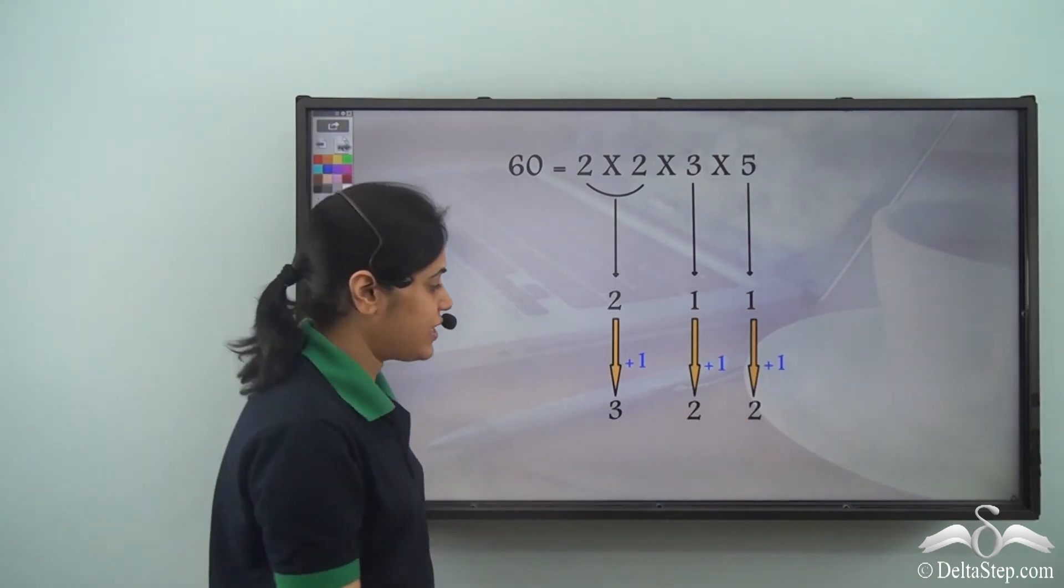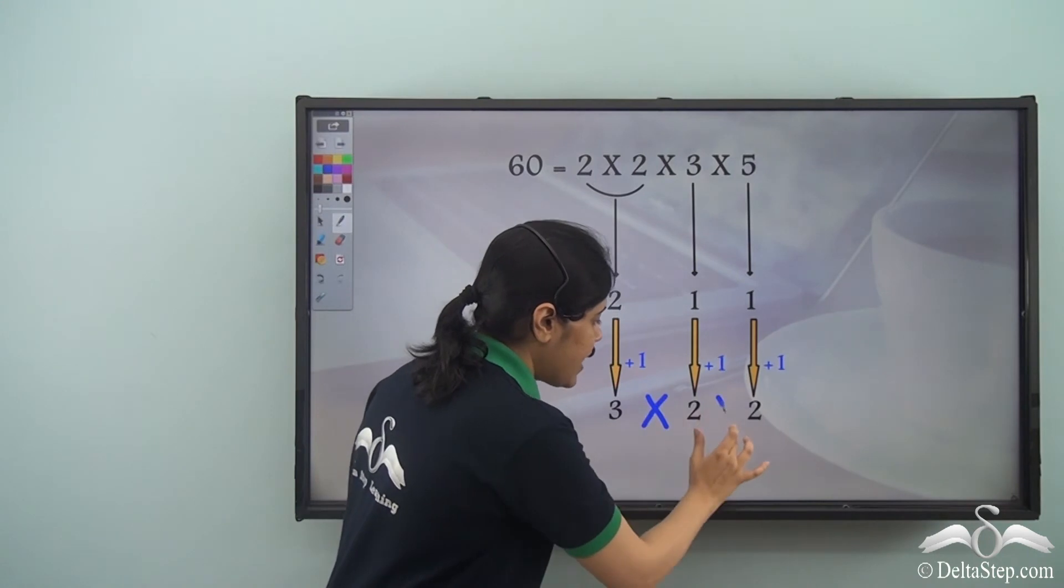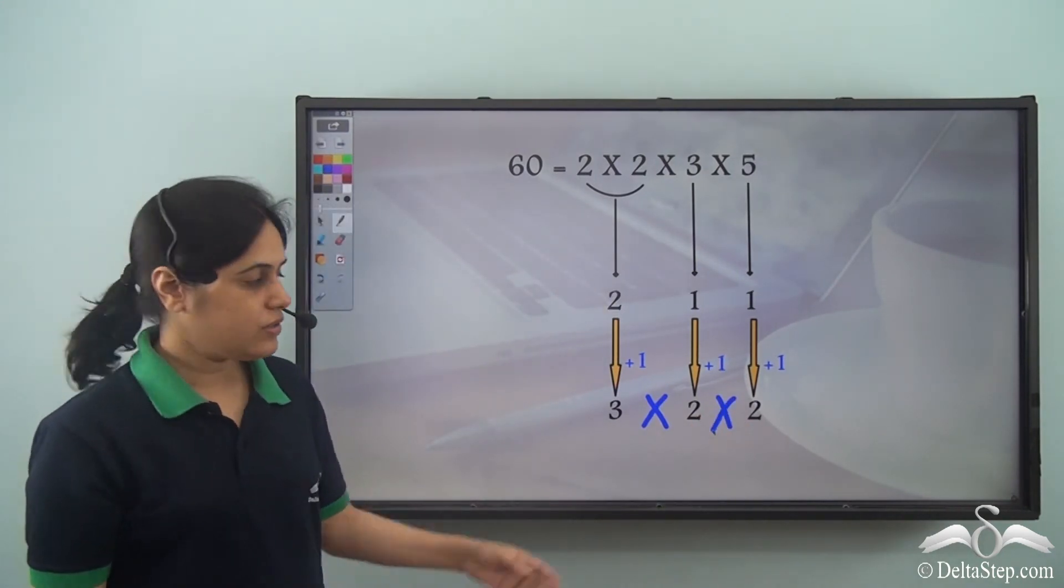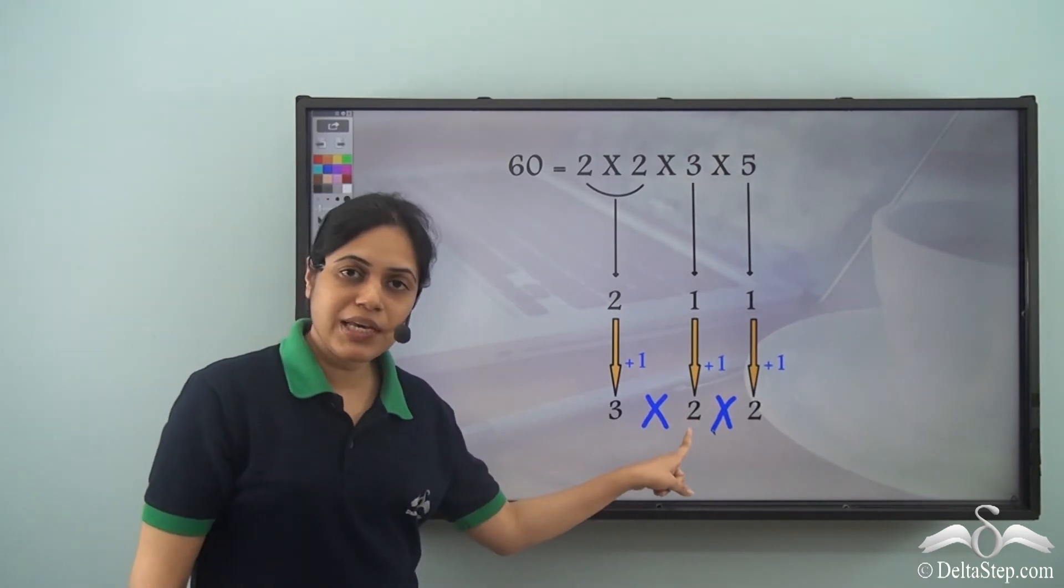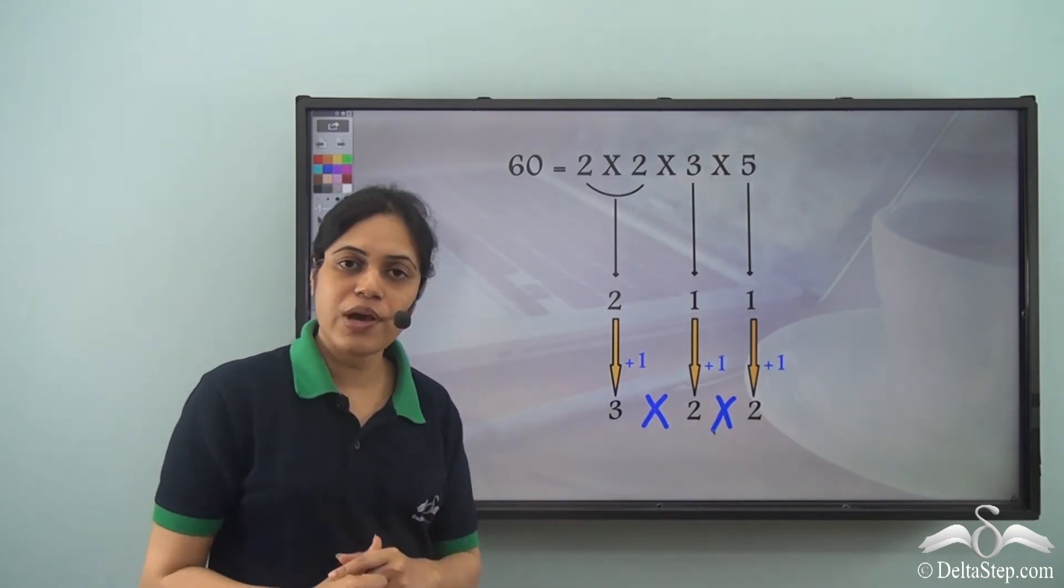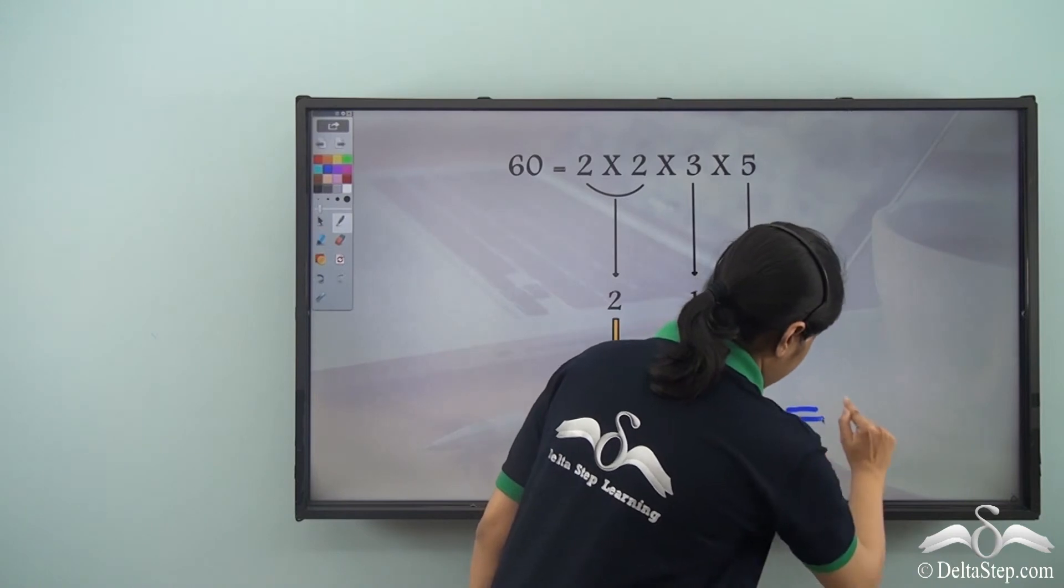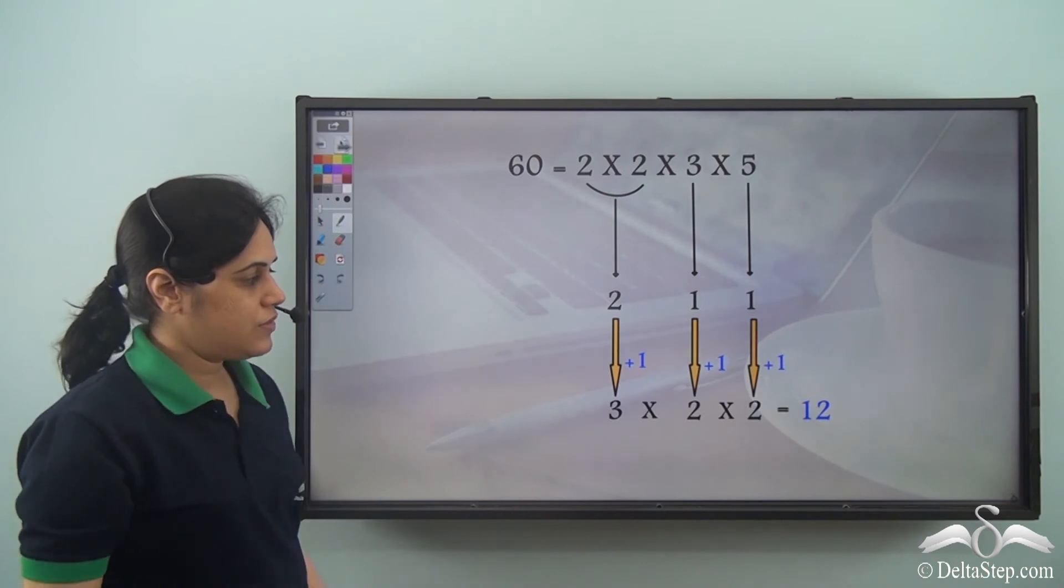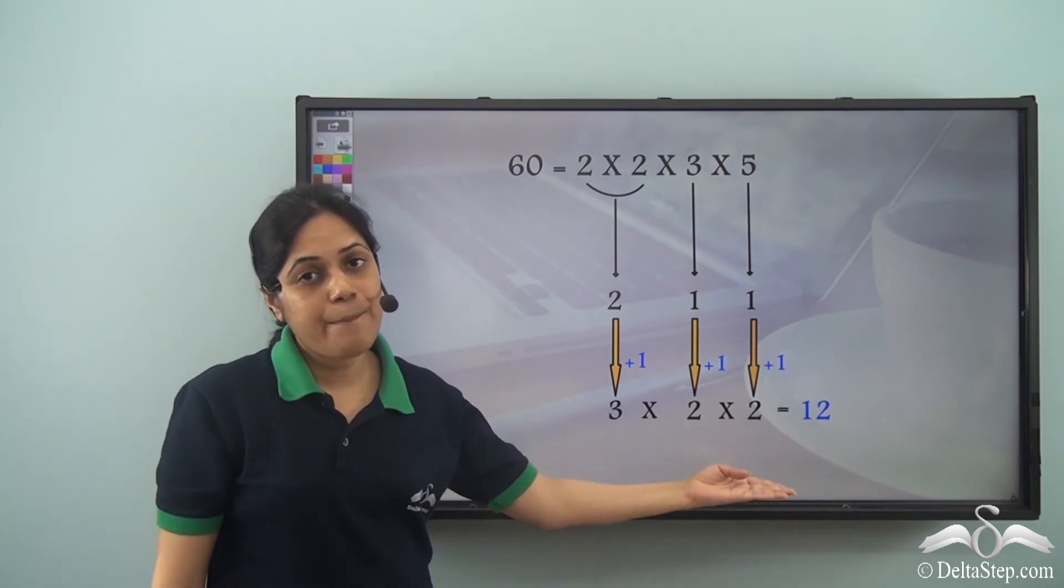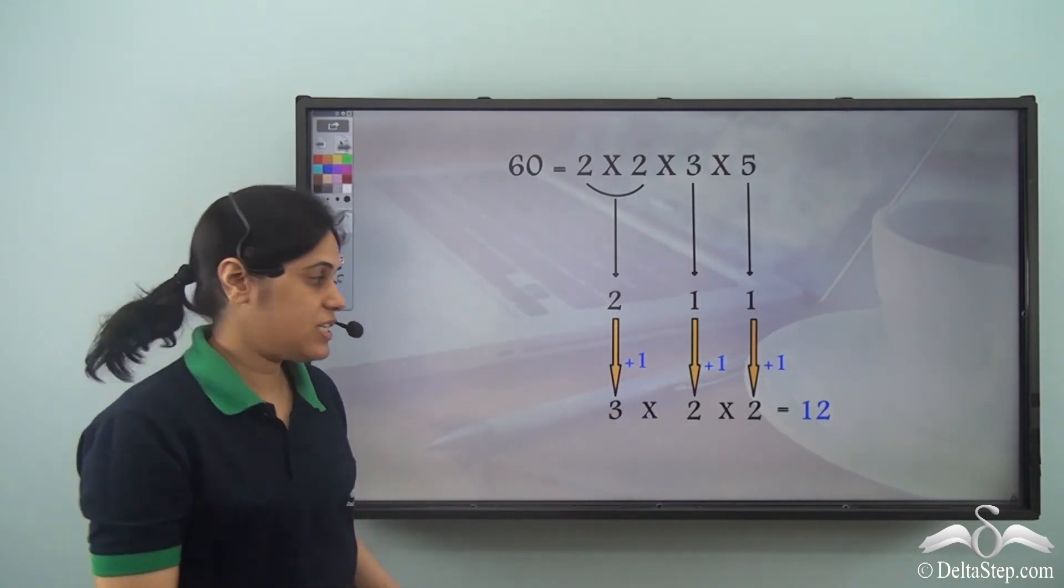Now the next step is to multiply these three: 3 into 2 into 2. Now 3 into 2 is 6, and 6 into 2 is 12. So I get 12 as the answer. So 12 is the number of factors of 60.